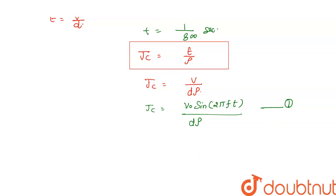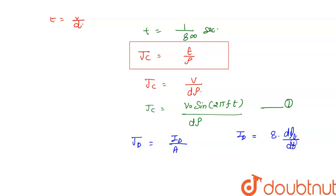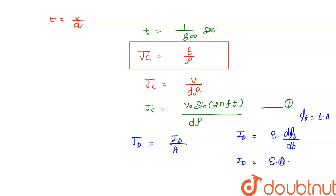Now for displacement current density: the displacement current Id = epsilon₀ × d(ΦE)/dt. The electric flux ΦE = E × A, and since area A is constant, only the electric field changes. So Id = epsilon₀ × A × dE/dt.